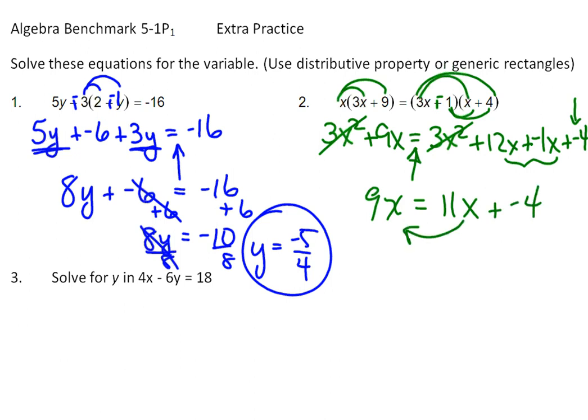And then perhaps bring the 11 over here. So negative 2x equals negative 4. Those are going to be gone. Divide by the negative 2. And x is 2.